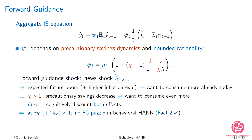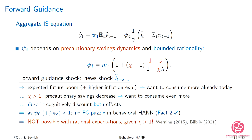The condition to rule out the forward guidance puzzle is that Psi_F needs to be smaller than one. There is no forward guidance puzzle in the behavioral HANK model for basically all parameterizations — we can account for fact two. However, this is not the case with rational expectations: the forward guidance puzzle becomes even stronger compared to the representative agent rational expectations model, as long as you keep chi larger than one.